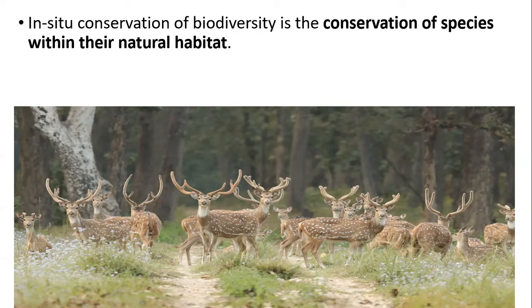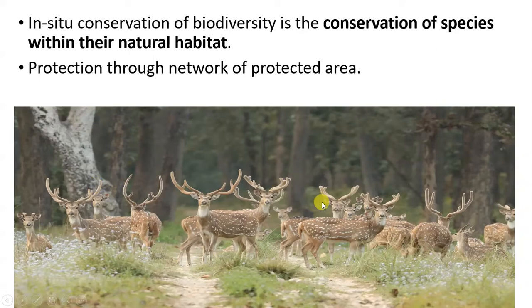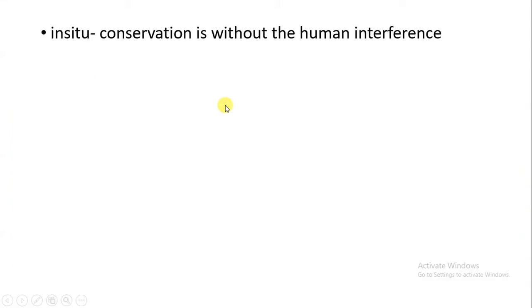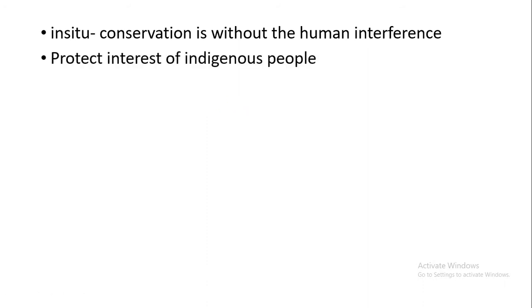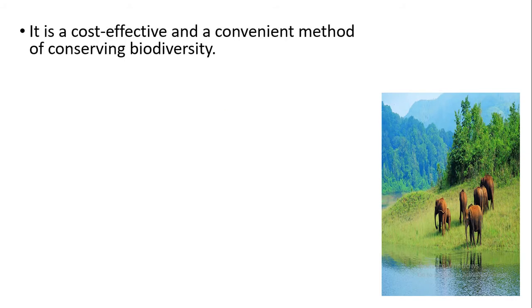In in-situ conservation, we are conserving species within their natural habitat. A kind of protective area is made for these species so that they cannot be disturbed by any kind of human activities. This kind of conservation is less expensive and easy to manage. It is without human interference and is for the protection and interest of indigenous people, helping them understand how animals live in their natural habitat. It is cost-effective, convenient, and allows us to conserve biodiversity of both plants and animals.